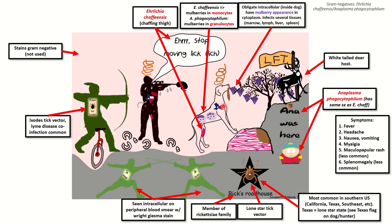The symptoms of Ehrlichia chaffiensis and Anaplasmosis are: fever, headache, nausea, vomiting, myalgia, maculopapular rash (which is less common), and splenomegaly (which is also less common). I have represented those in this figure as follows.